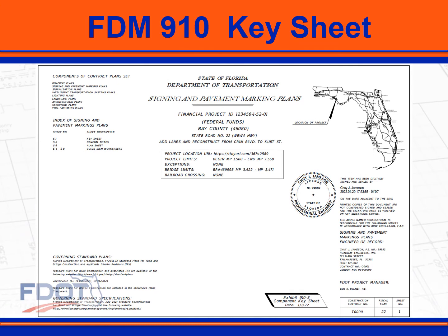Component key sheets will look similar to the lead key sheet. A change from FDM 302, the component key sheet will show the list of contract plans components, the location URL and work limits, and the governing standard plans and standard specifications.